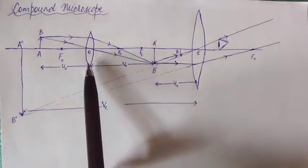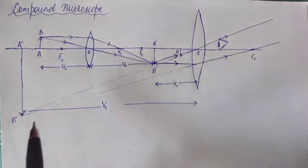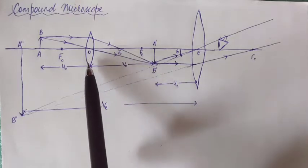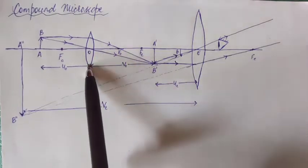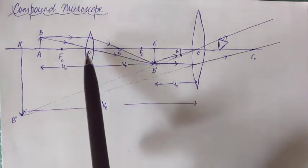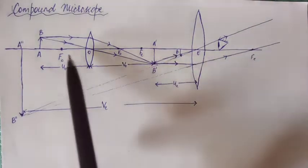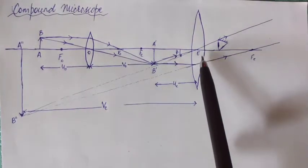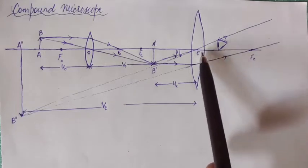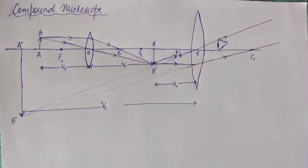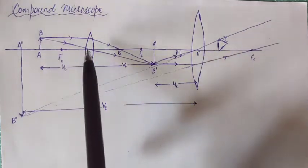This convex lens, as you can see in the picture, is very close to our object AB. Hence this convex lens is called the objective lens — since it is closer to the object. The objective lens has a very short focal length F0, while the other lens has a longer focal length FE. The lens closer to the eye is called the eyepiece. FE is the focal length of the eyepiece and F0 is the focal length of the objective.